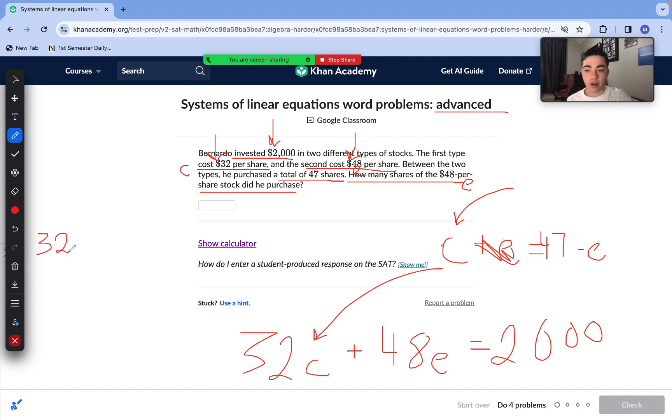This is what we're going to substitute into our second equation. So that's going to turn into 32 times (47 minus E) plus 48E equals 2000. Now we're going to use distributive property and solve this out. 47 times 32, I'll be doing this manually. 7 times 2 is 14, 4 times 2 is 8 plus 1 is 9. 7 times 3 is 21, 4 times 3 is 12. So we are left with 1,504.